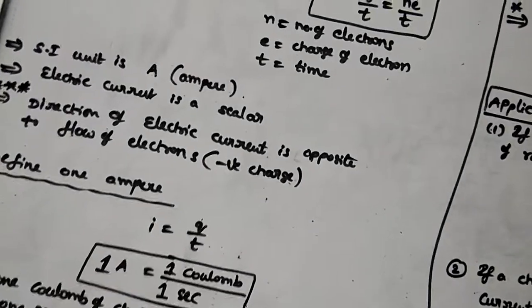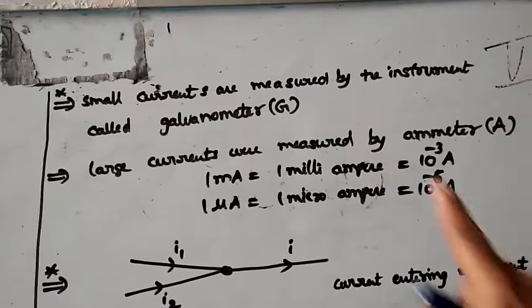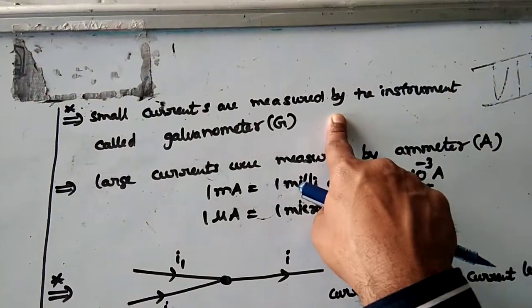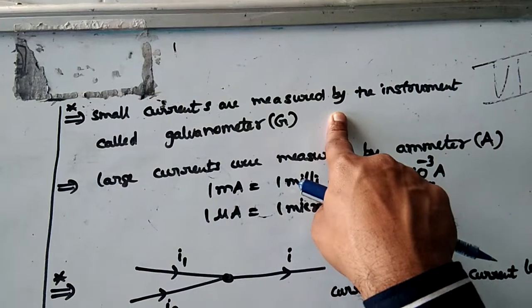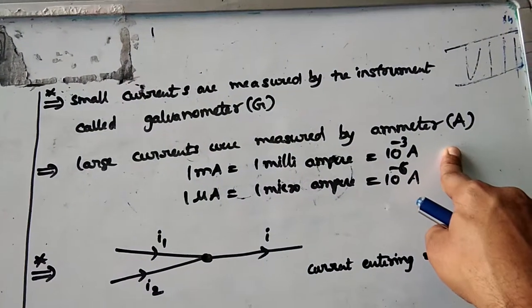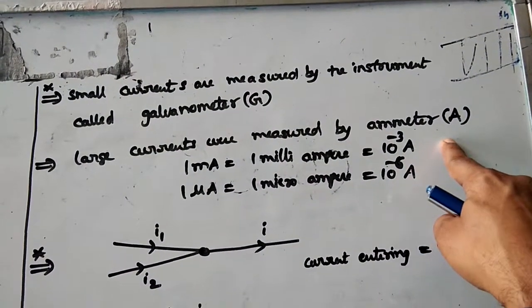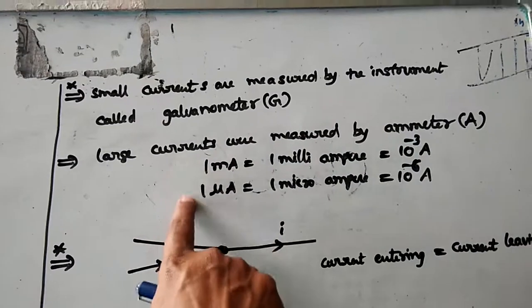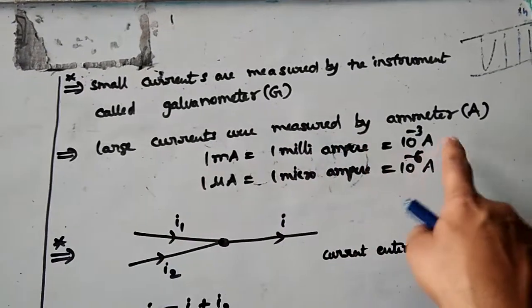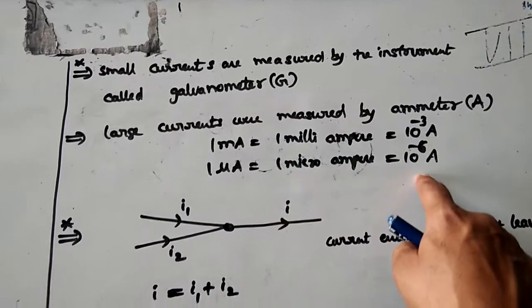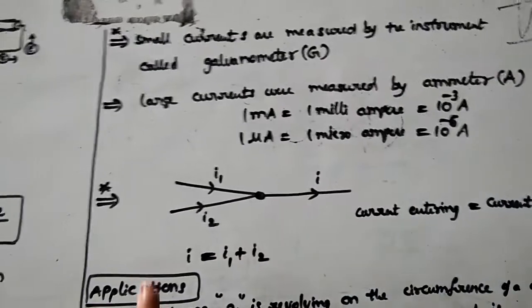Small currents are measured by an instrument called a galvanometer, and large currents are measured by an ammeter. Note the prefixes: 1 milliampere = 10⁻³ A, and 1 microampere = 10⁻⁶ A.